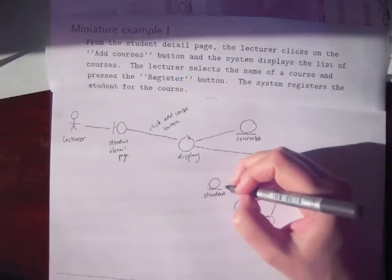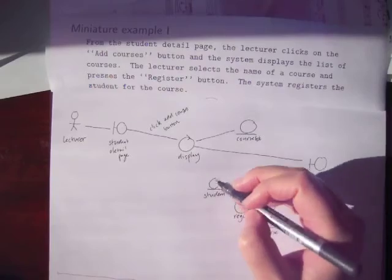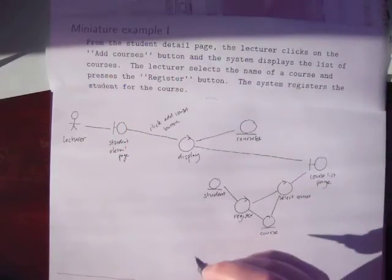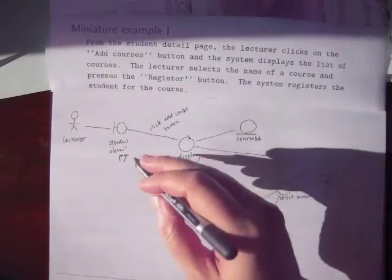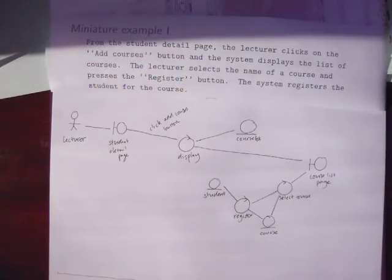And now we're going to register for the course. Now we'd really better record which student it's going to be we register. You could argue we already know which student it was at the student detail page. But then, we'd have to have another controller to join them up. And I think we're really getting then into how does the lecturer get to the student detail page in the first place, which is probably a different use case. So we won't get into that.